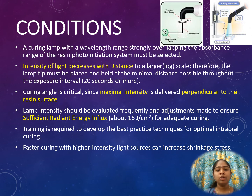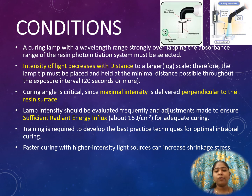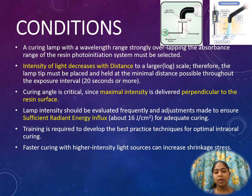Lamp intensity should be evaluated frequently, and adjustments should be made to ensure sufficient radiant energy influx — about 16 joules per centimeter squared for adequate curing. For example, if a lamp emits 1000 joules per centimeter squared but due to energy dissipation as heat or removal of unnecessary wavelengths only 750 joules per centimeter squared is delivered, and the material requires 800 joules per centimeter squared, there will be a shortage of energy. Training is required to develop the best practice techniques for optimal intraoral curing.